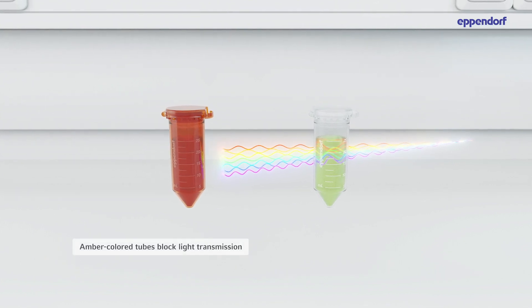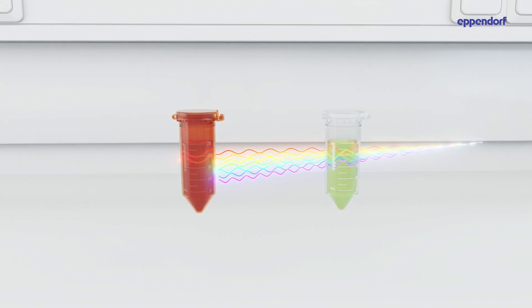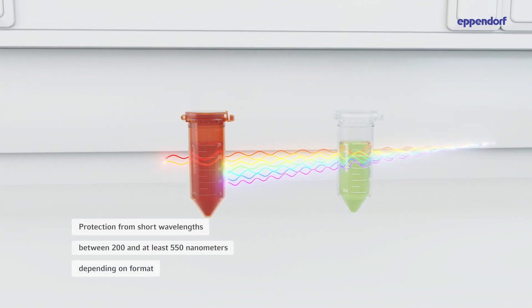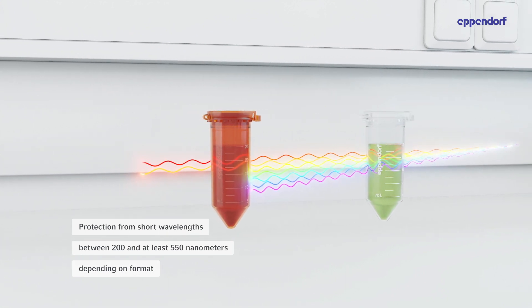Amber-colored laboratory plastic tubes effectively block light transmission, particularly in the energy-rich, short-wavelength UV-VIS spectrum between 200 and at least 550 nanometers, depending on format.